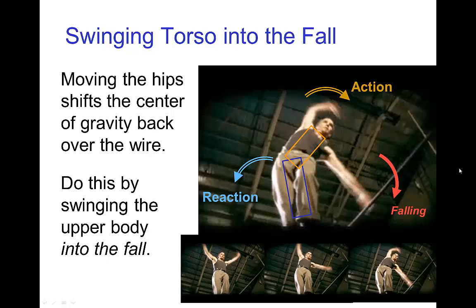When even more recovery is needed, the tightrope walker needs to shift their hips rapidly, and that can be done by throwing the whole upper body into the fall. Here in these poses, we see this tightrope walker, in order to recover balance, throwing his upper body and also rotating his arms in the direction of the fall. That action allows his lower body to rotate in the other direction — in this case counter-clockwise — allowing the hips to shift back over the wire, repositioning the center of gravity over the wire.